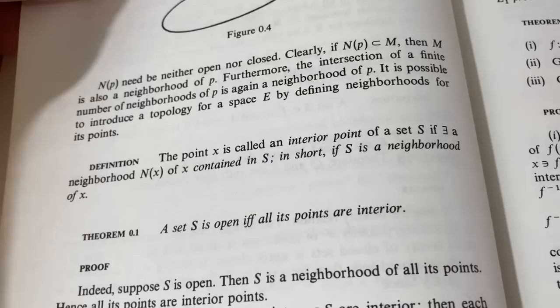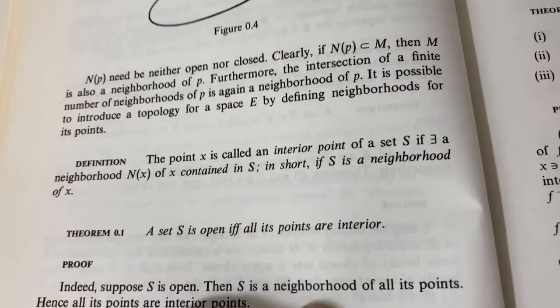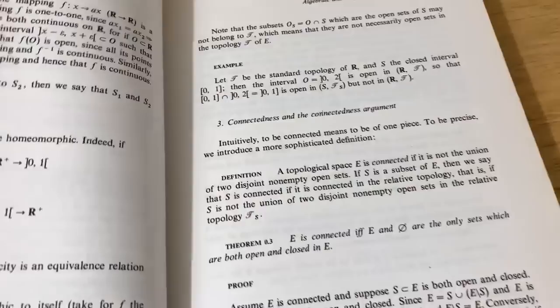Here's talking about interior points. The point X is called an interior point of a set S. If this backwards E means there exists, a neighborhood N of X contained in S. In short, if S is a neighborhood of X. Cool. So that's open if all of its points are interior points. Yeah. Pretty cool stuff.